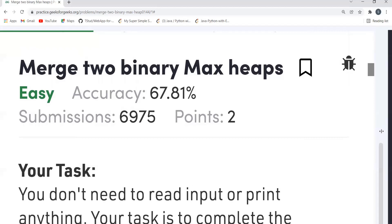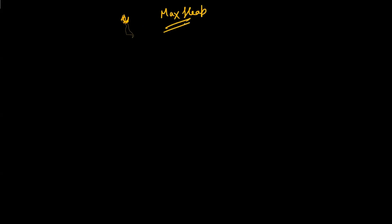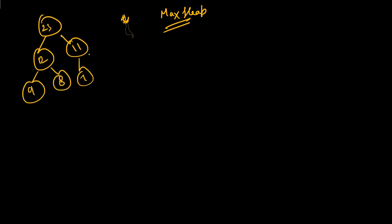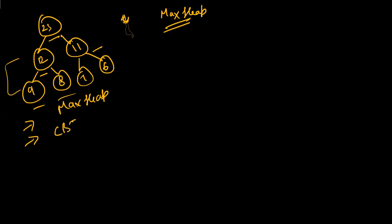Let me give you some idea regarding the max heap. In a max heap, the root node or parent should be greater than its children. For example: [23, 12, 11, 9, 8, 7, 6] — for every parent, 23 is greater than its children 12 and 11, and recursively the same property is satisfied below. Also, the given tree should be a complete binary tree — these two conditions must be satisfied.